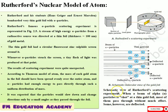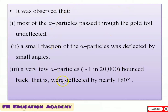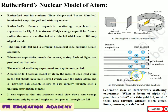This is a schematic view of Rutherford's scattering experiment. When a beam of alpha particles is shot at a thin gold foil, most of them pass through without much effect, while some get deflected. Three observations were made: most alpha particles passed through the gold foil undeflected; a small fraction was deflected by small angles; and a very few — approximately 1 in 20,000 — bounced back, deflected by nearly 180 degrees.